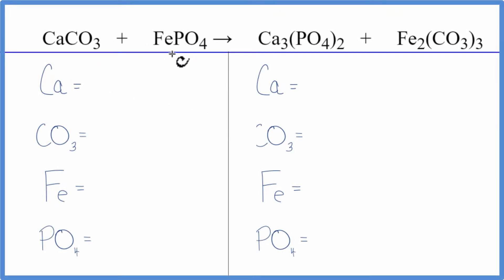In this equation, we have calcium carbonate and iron-3-phosphate. This is a double displacement reaction.